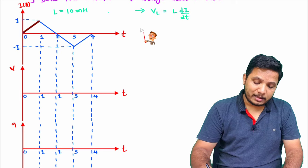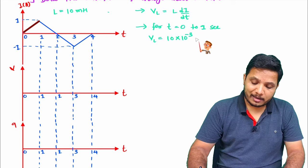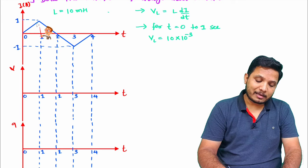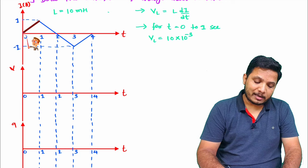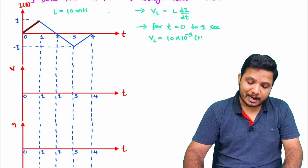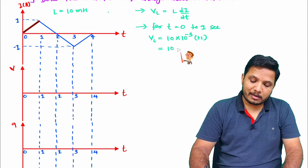For time 0 to 1 second, VL = 10 × 10⁻³ × (di/dt). The di/dt is the slope of this line — change in y divided by change in x. The slope is positive: 1 divided by 1, which equals +1. So di/dt = +1, and voltage across the inductance during 0 to 1 second is +10 millivolts.